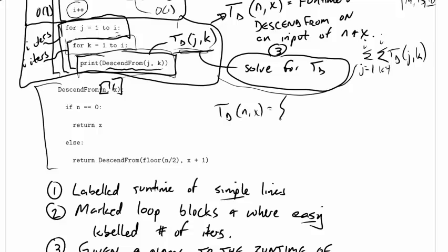T_D is equal to, well the base case is really easy, here it is right here. When n is equal to 0 I'm just going to return x, this will take constant time, and so this check up here if n equals 0, overall this is going to take constant time.